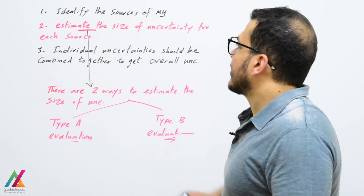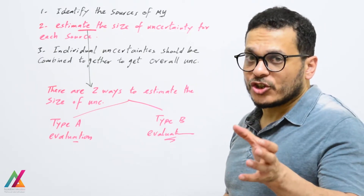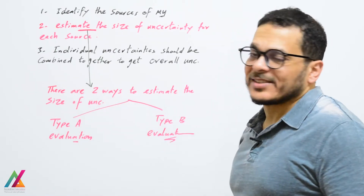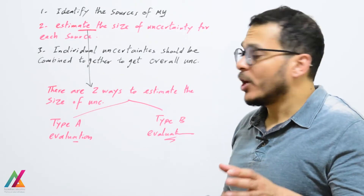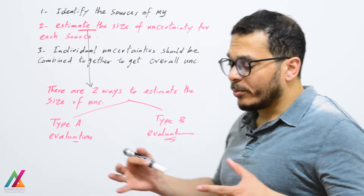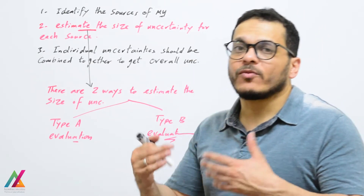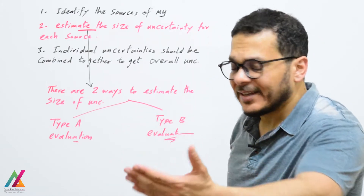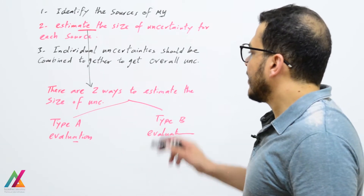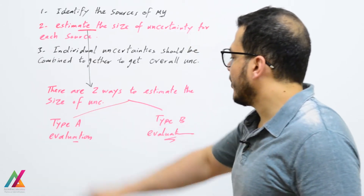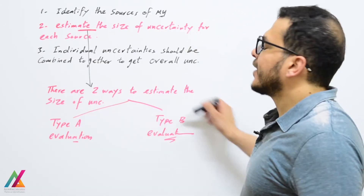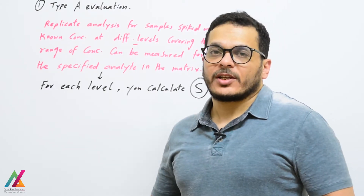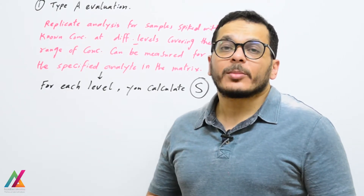To estimate the size of uncertainty for each source, there are two ways: Type A evaluation and Type B evaluation. Both of them will be combined together to get the combined uncertainty, then the expanded uncertainty.